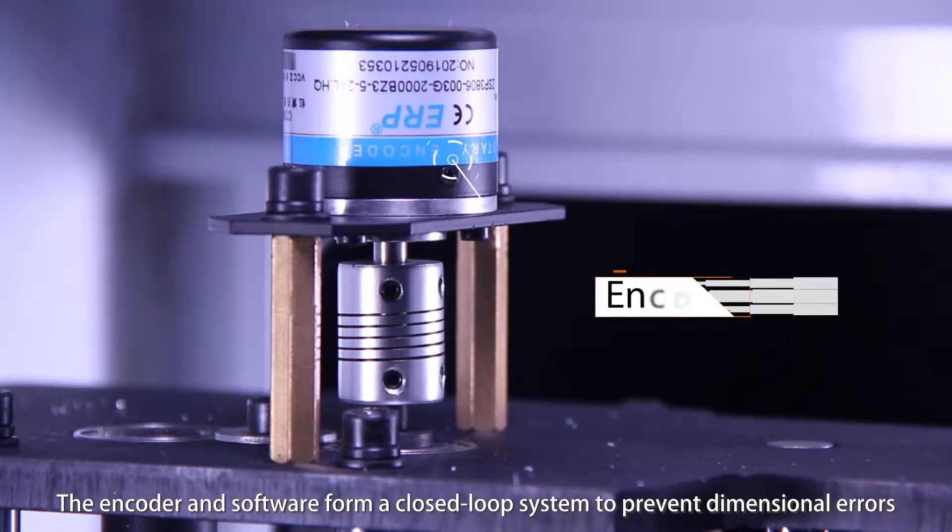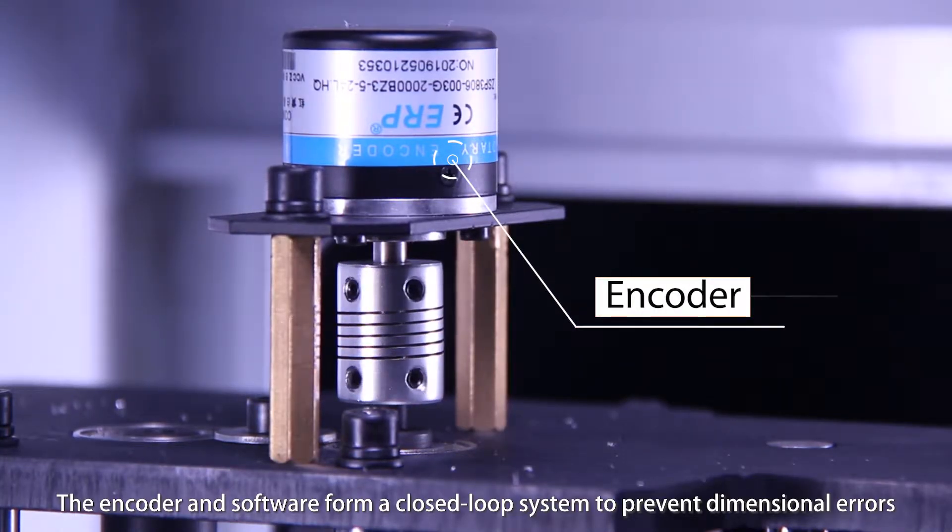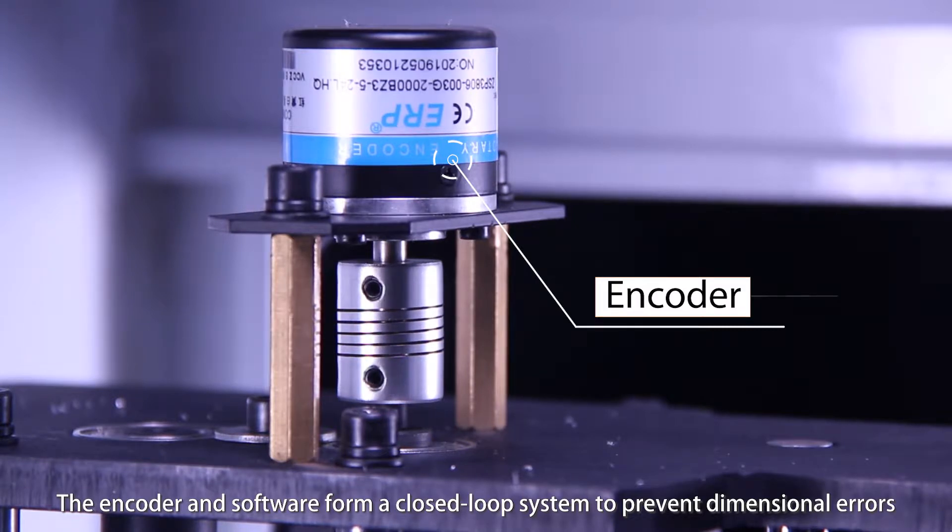The encoder and software form a closed loop system to prevent dimensional errors.